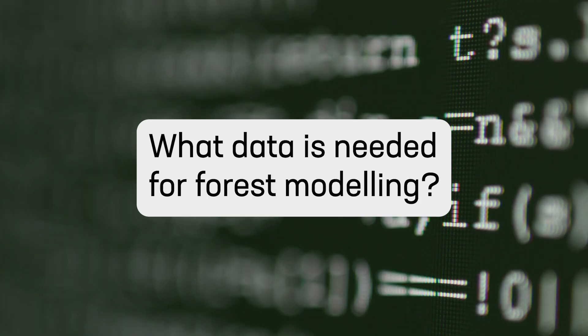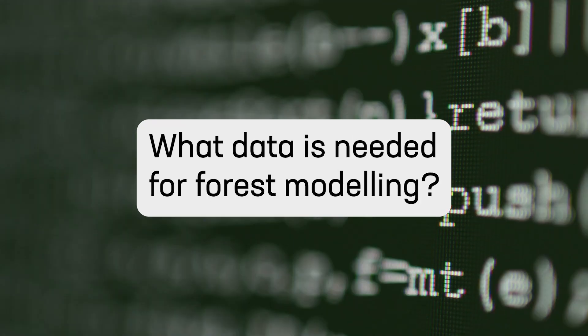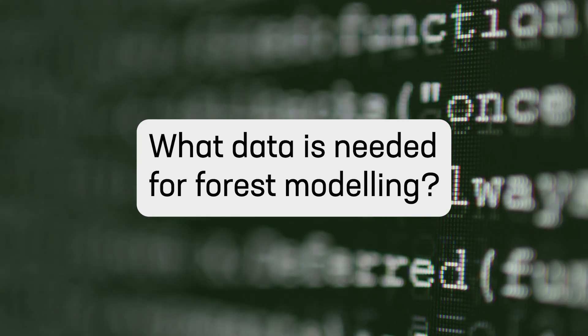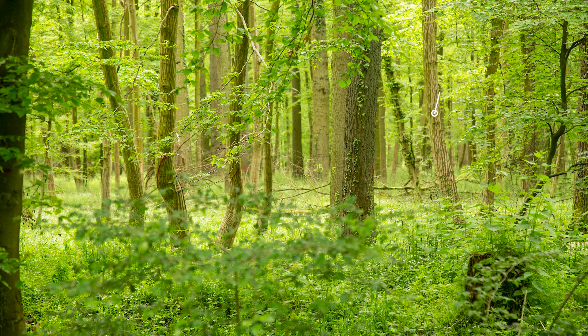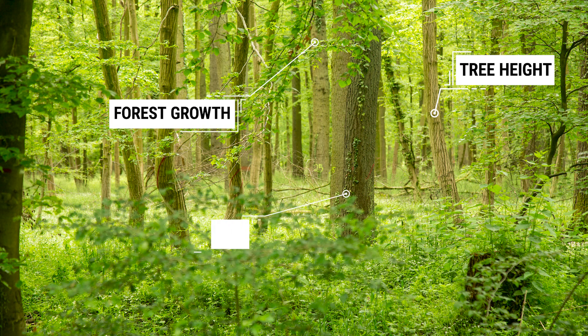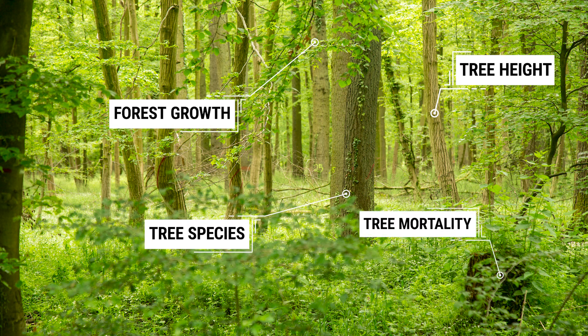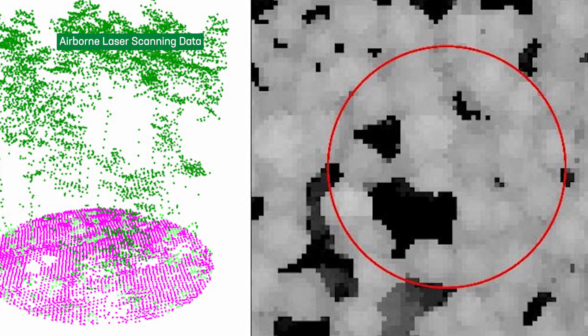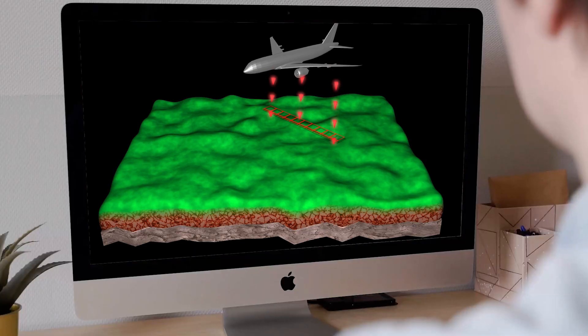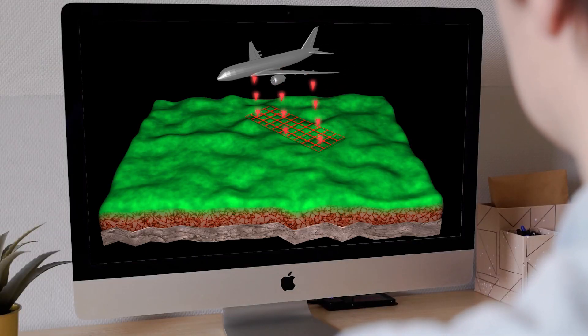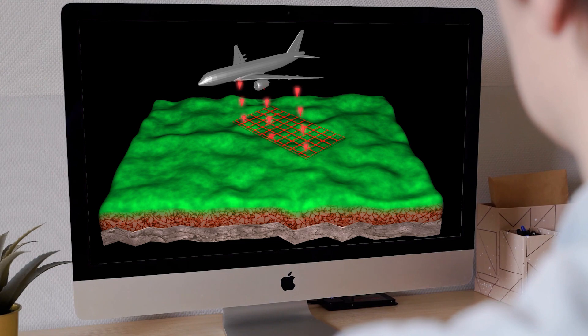There are different types of data needed to develop and apply forest simulation models. To set up the models, we need experimental data on forest growth, forest mortality, and forest regeneration. It is also important that the models reproduce regional forest conditions. We use data from airborne laser scanning, a technique where a sensor placed on a plane measures the forest over very large territories.